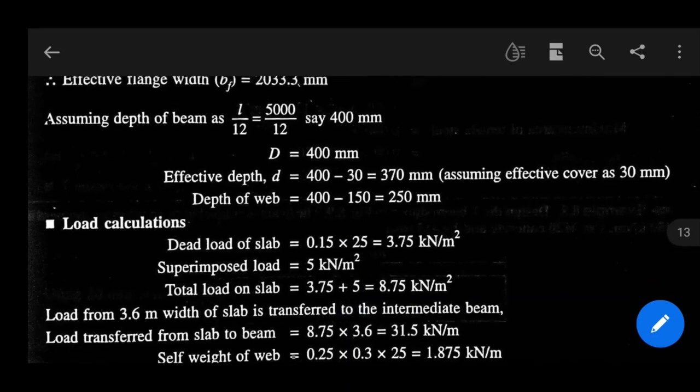Now we have to calculate load. Load calculation part. Dead load of slab is 0.15 into 25, that equals 3.75 kilo Newton per meter square. Superimposed load is 5 kilo Newton per meter square, which is given. So total load on slab will be 3.75 plus 5, that equals 8.75 kilo Newton per meter square.